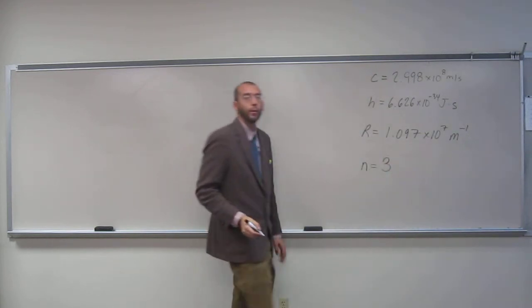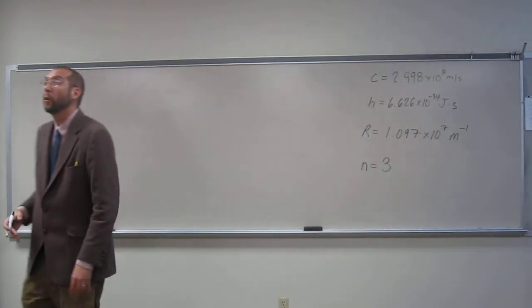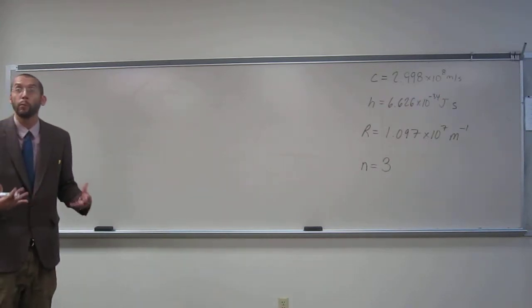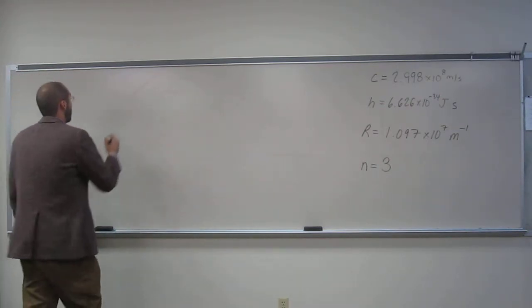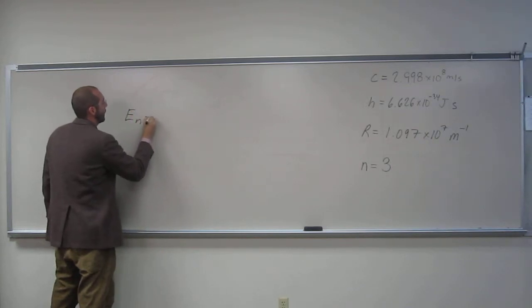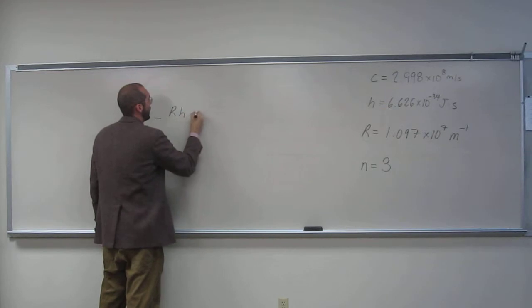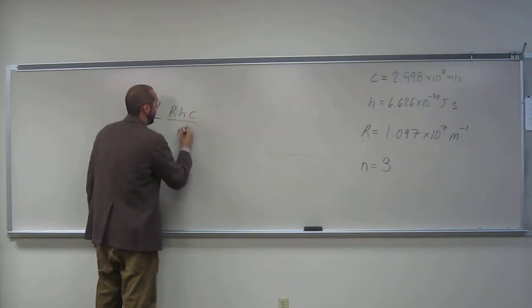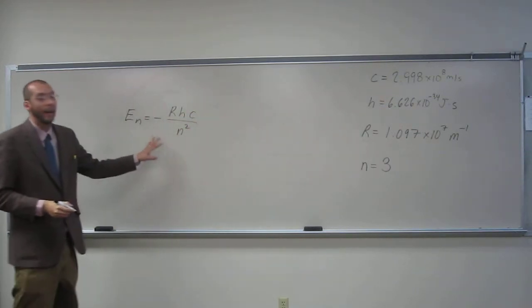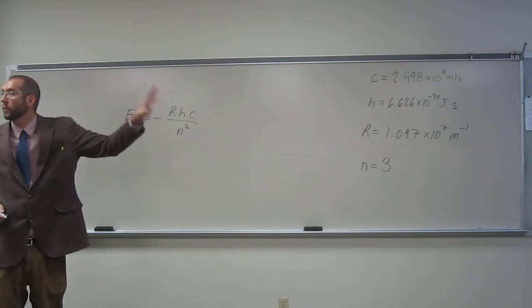So in this problem we're going to have to use Bohr's equation. So what was that? E_N equals negative RHC over N squared.